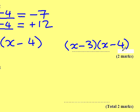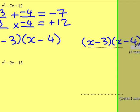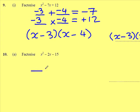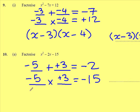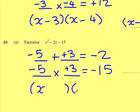Question 10. Factorise x squared minus 2x minus 15. Two numbers, when added, need to give me minus 2 and when multiplied, should give me minus 15. Looking at 15 — ignoring the minus — I know it's going to be 5 and 3. To get minus 2, I need minus 5 and plus 3. You can always check by using a number line. So, factorising completely, I need two brackets with minus 5 in one and plus 3 in the other: x minus 5 and x plus 3.